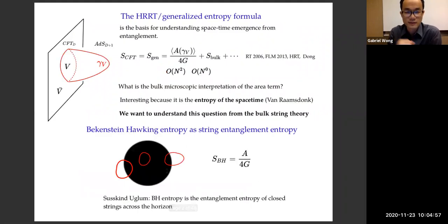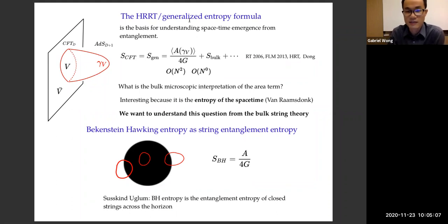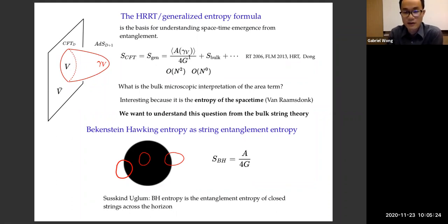I want to motivate my talk by discussing first ADS-CFT and the HRRT or generalized entropy formula, which is the basis for our understanding of how spacetime emerges from entanglement. The formula tells us that the entanglement entropy of a boundary CFT of some sub-region V is given by the generalized entropy in the bulk, which has an area term — the analog of Bekenstein-Hawking entropy — plus a bulk correction, which is the entropy of bulk quantum fields across the extremal surface gamma.